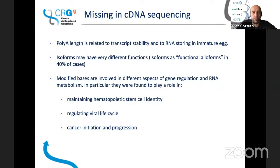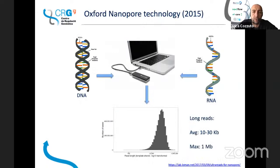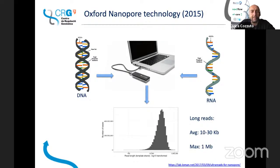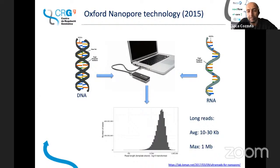Getting this information is quite important, especially if you want to annotate a new genome or discover new functional elements. The technology that allows us to do that is the Oxford Nanopore one. This is quite recent — it's from 2015 and is now becoming more available in different labs. The big advantage compared with other technologies is that whether you have DNA or RNA, you are able to do the sequencing — you feed RNA directly into the instrument and you get the sequence of the whole transcript.